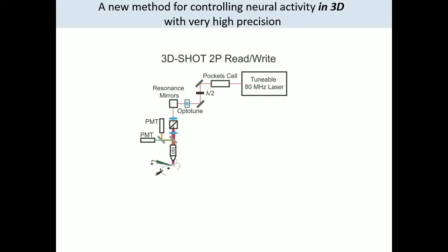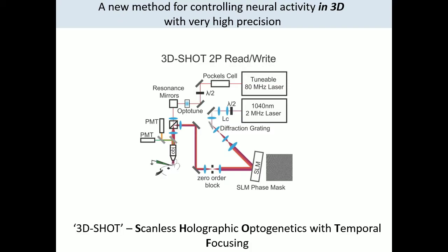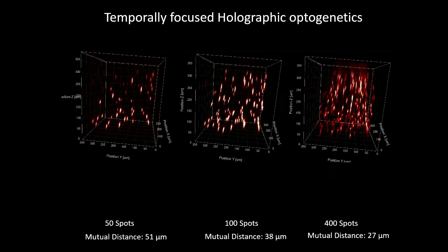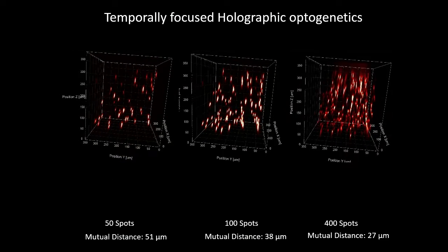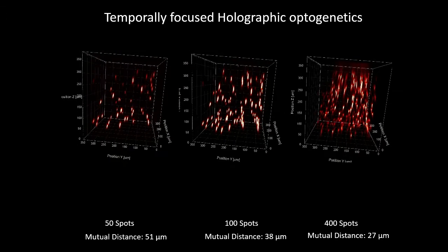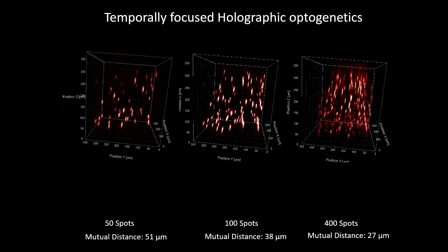The schematic of our microscope has two arms. One is a traditional resonance scanning two-photon microscope. The second is a novel approach in which we generate three-dimensional holograms of laser light from a very high-powered ultrafast laser in the brain. We call this approach 3D-SHOT — scanless holographic optogenetics with temporal focusing. We can measure and generate these holograms with a single shot from our laser, demonstrated here through fluorescent material showing spots at 50, 100, and 400 spots, generated directly in the brain using two-photon light to limit scattering effects.